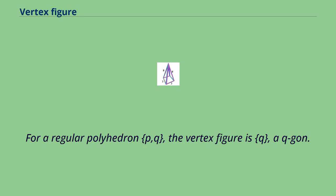For a regular polyhedron {p,q}, the vertex figure is {q}, a q-gon.